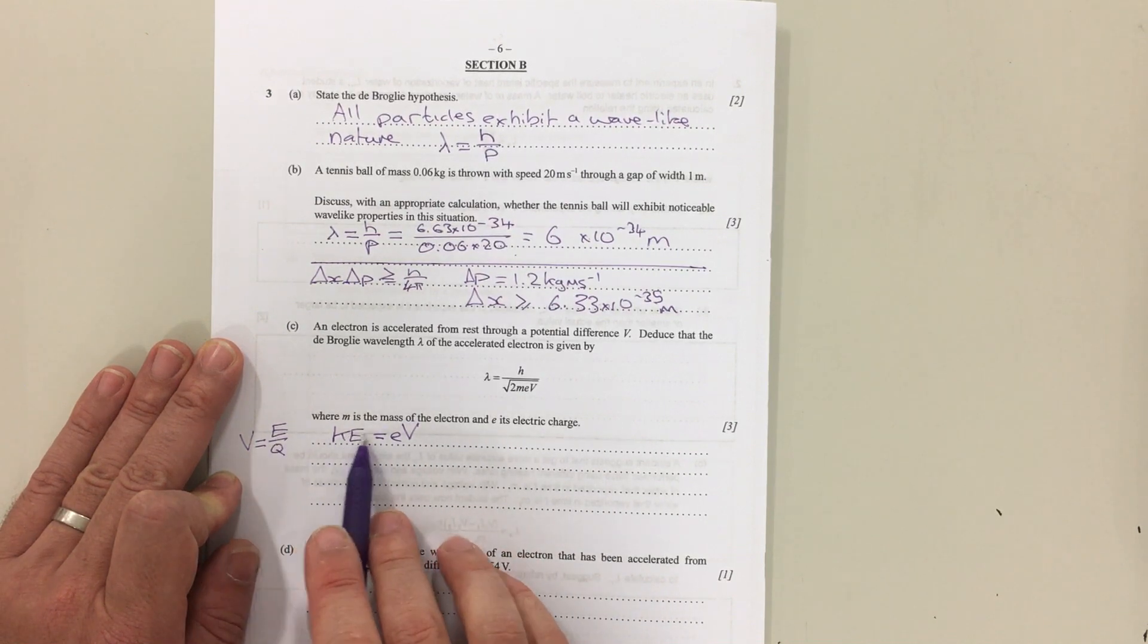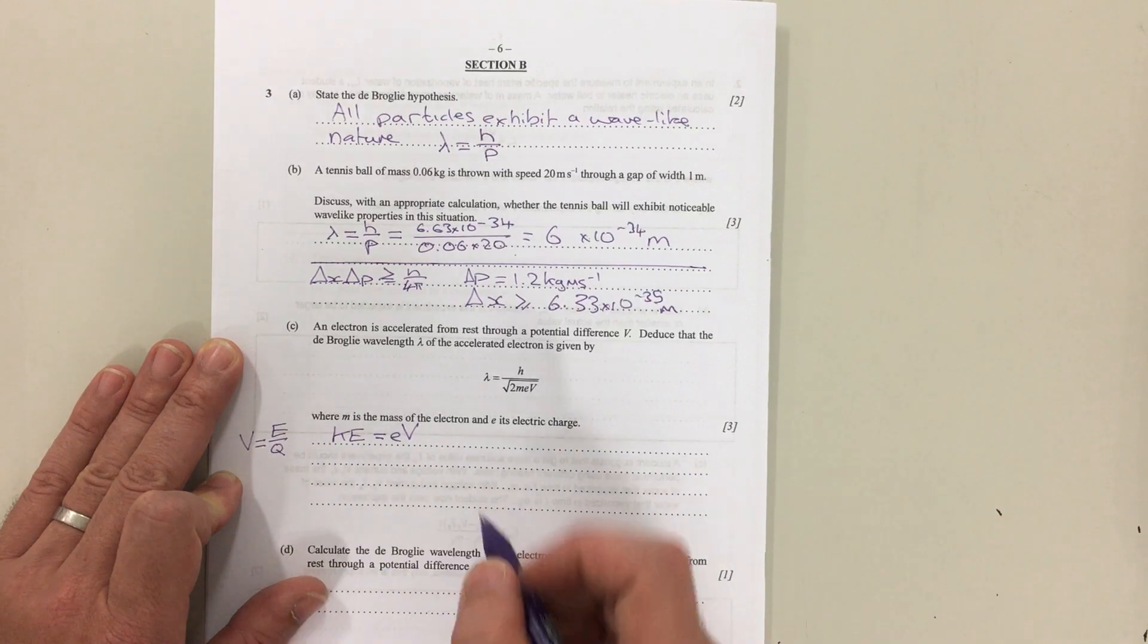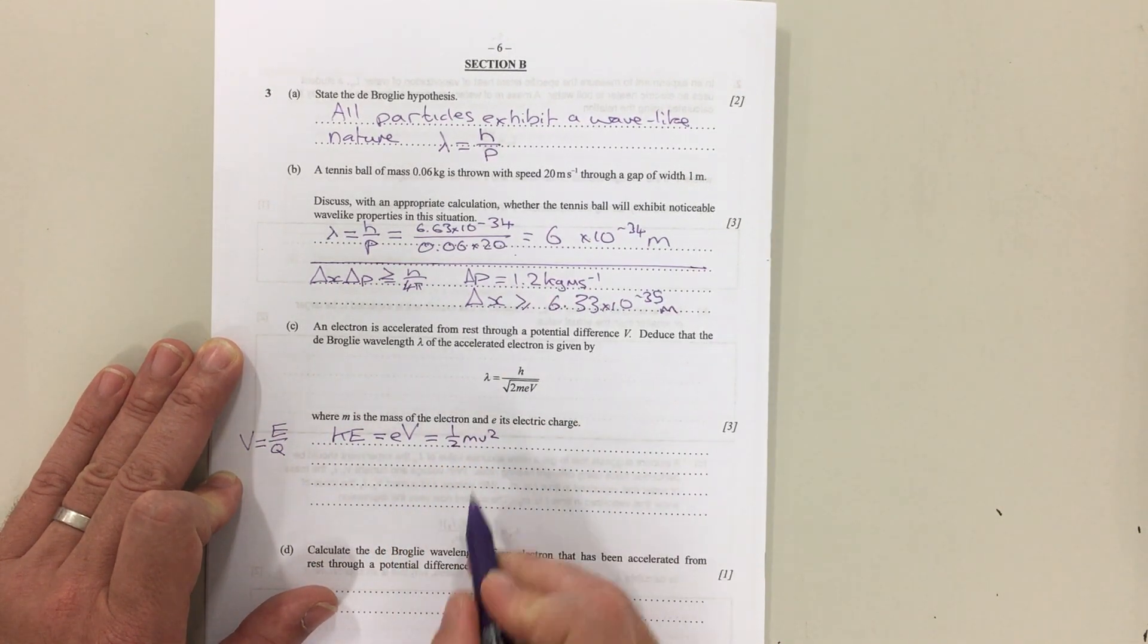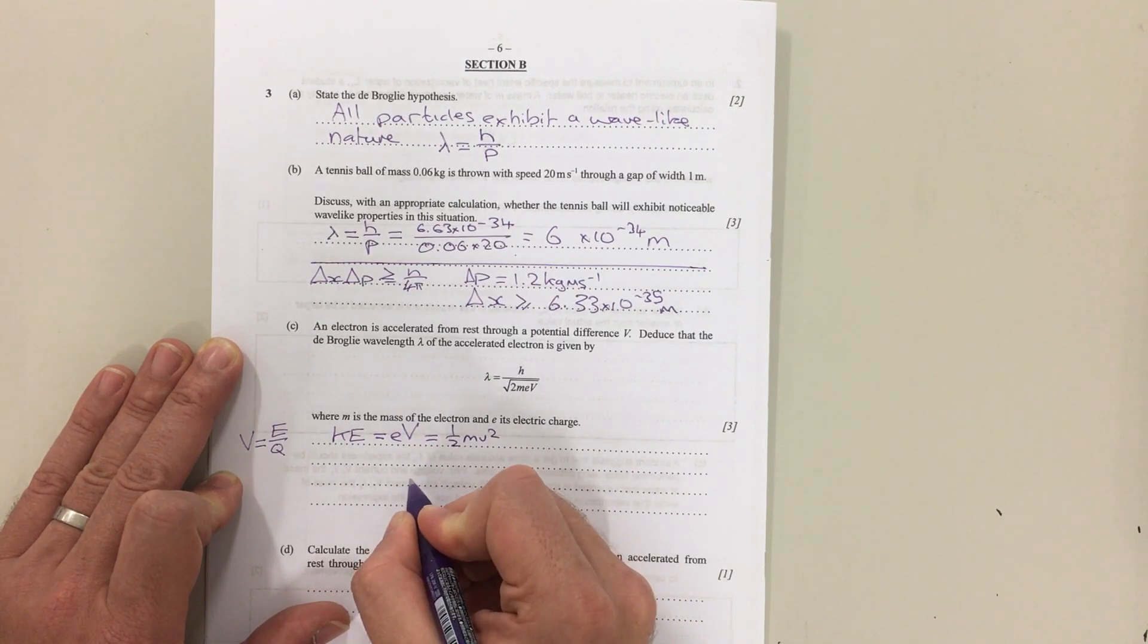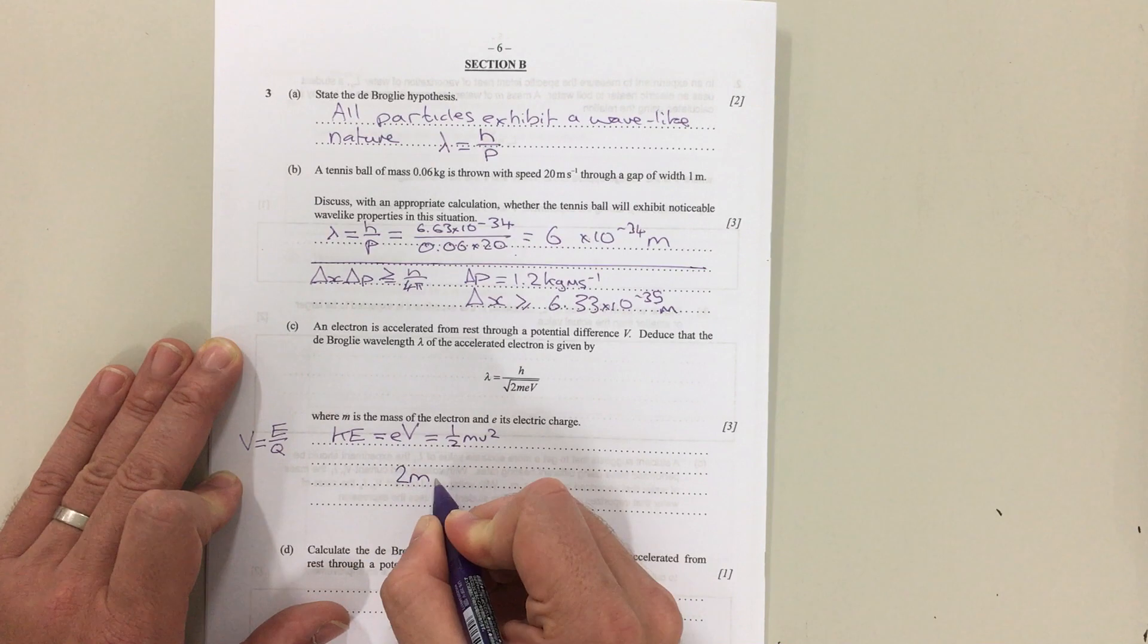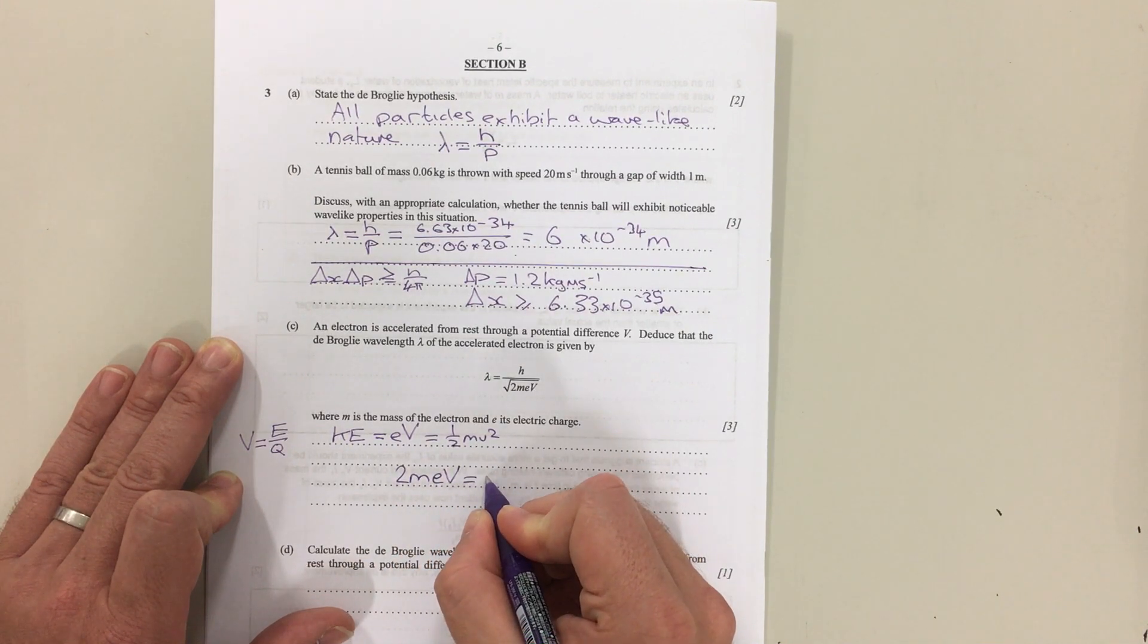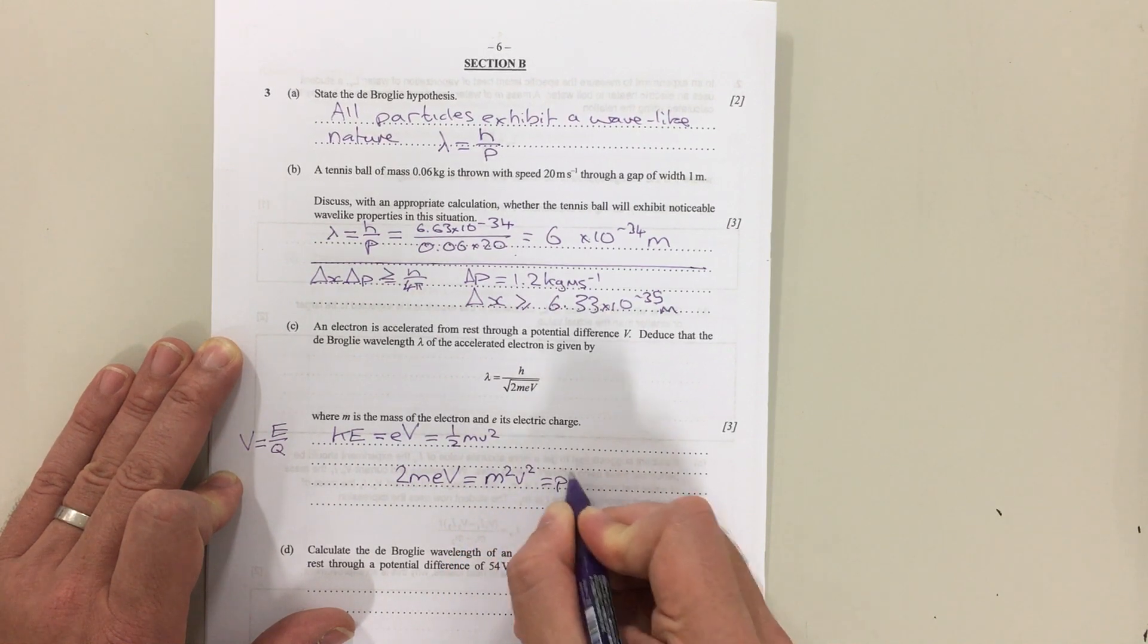The energy we're giving it is kinetic, so we can change that to this formula here. We can say that's also equal to ½mv² of the electron and we can rearrange this formula to say 2meV equals m²v², which is also equal to p² because mv is p, momentum.